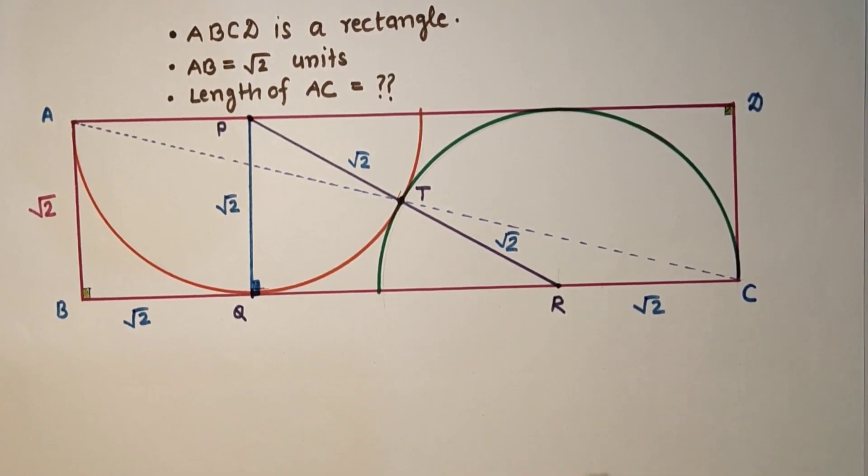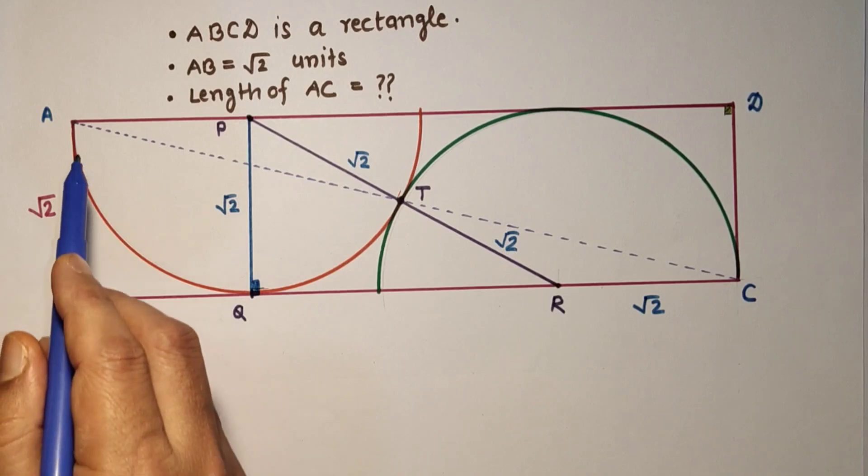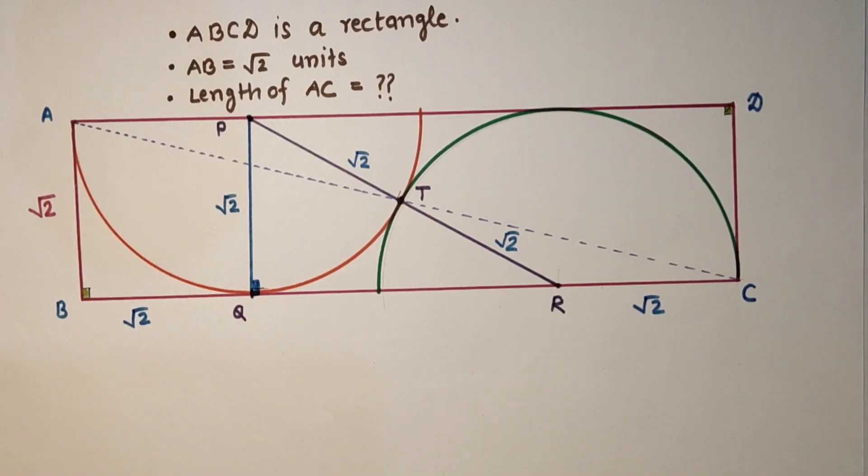So if we find QR then we can find BC, and after getting this BC and we know AB, using Pythagoras theorem to get this diagonal AC. So how to get this QR? Using Pythagoras theorem in this triangle.